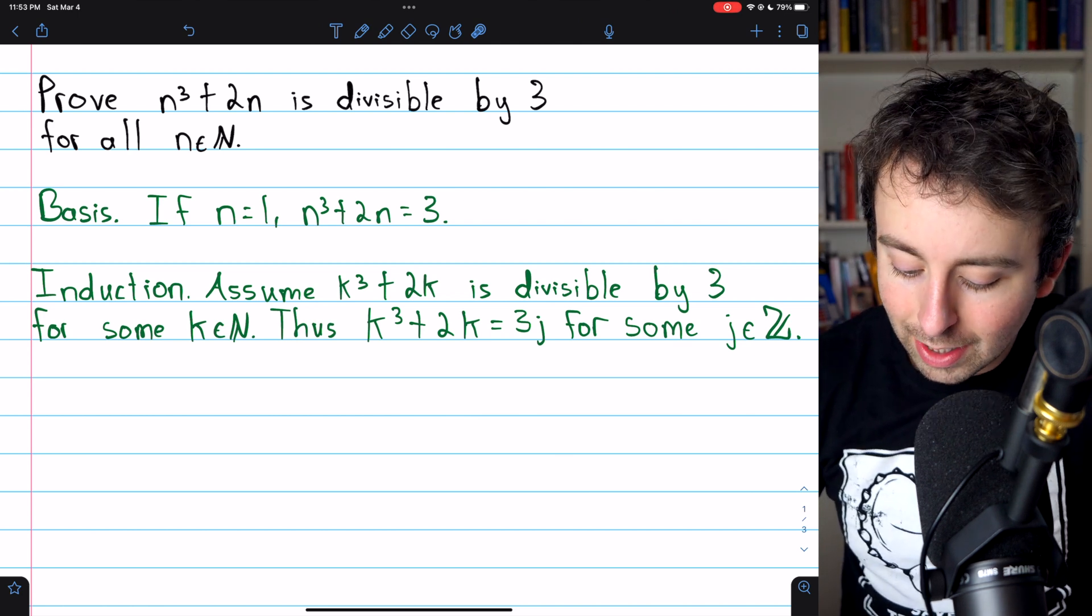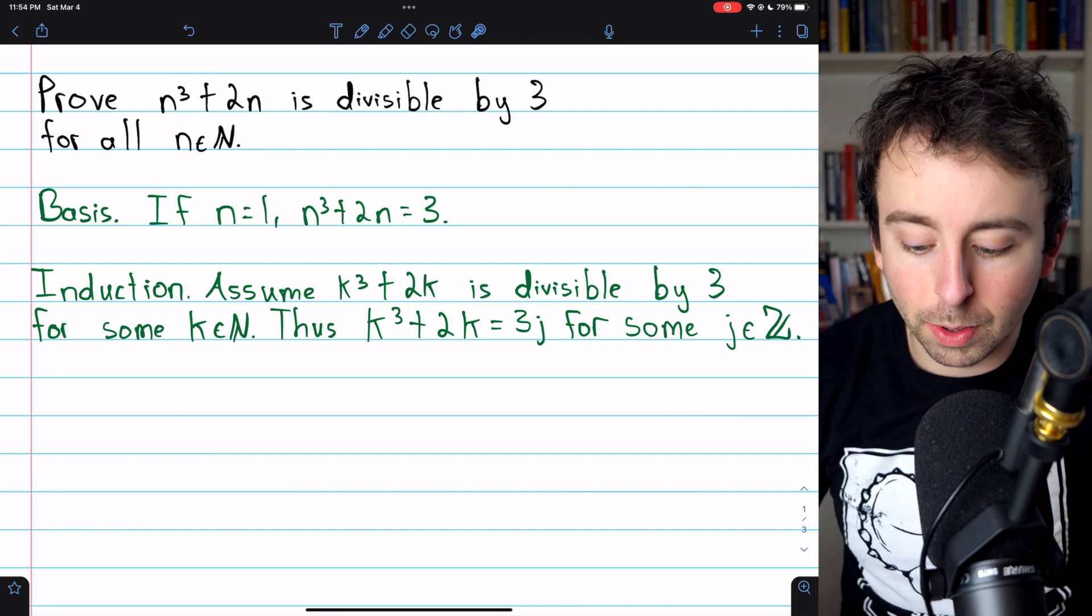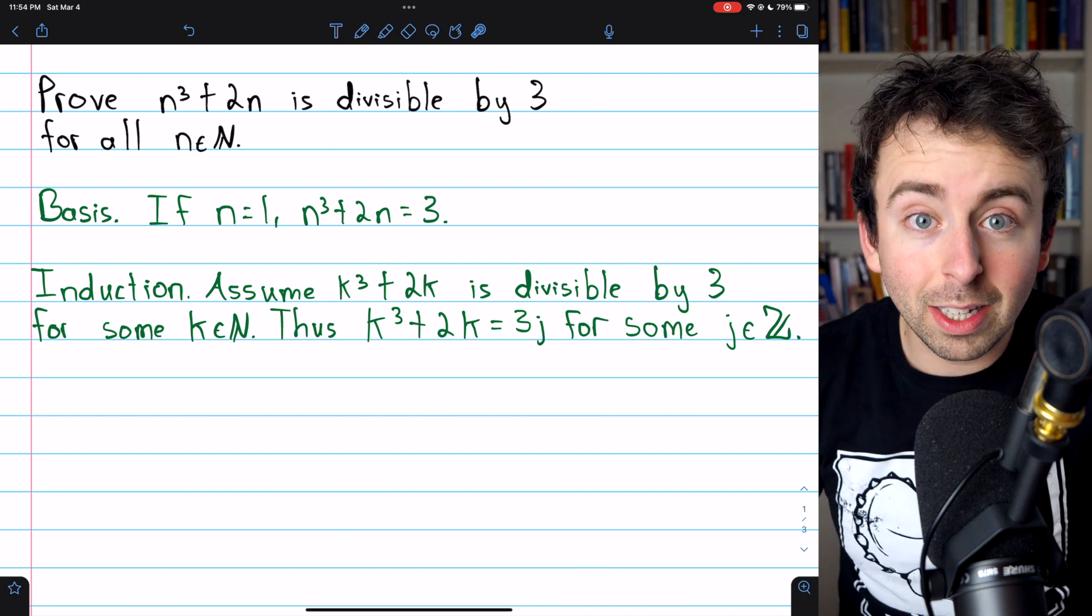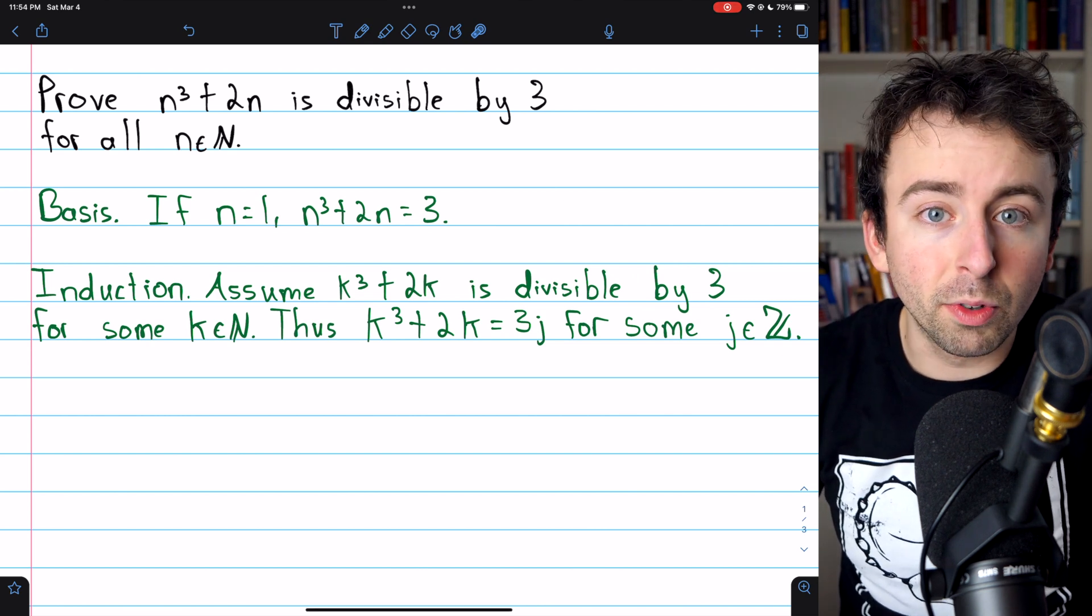Now we want to use this to show that the result is also true for the next positive integer, k plus 1. So we're going to be trying to show that k plus 1 cubed plus 2 times k plus 1 is divisible by 3.